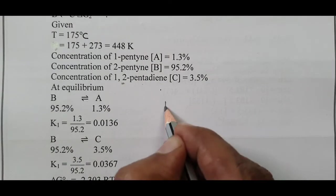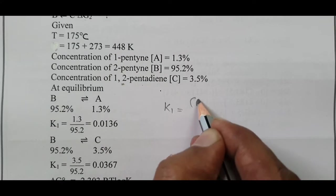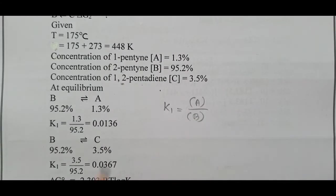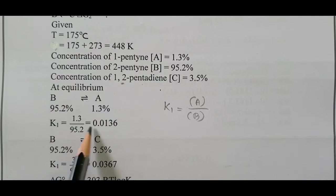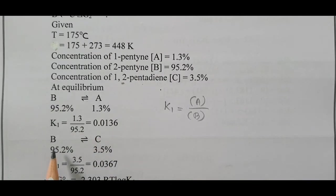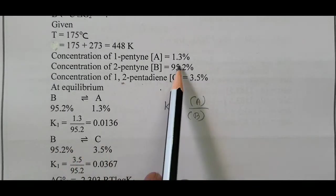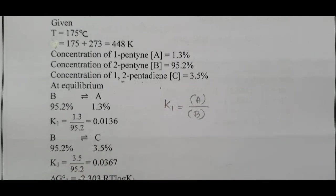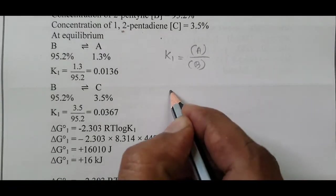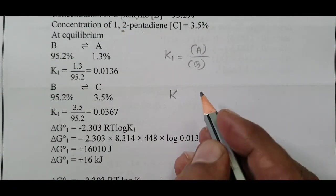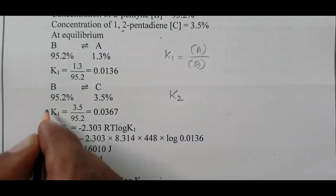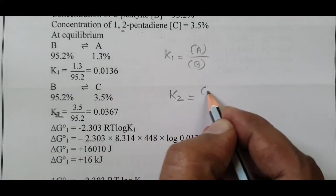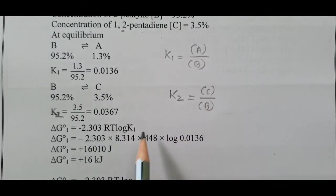At equilibrium, we need to calculate the equilibrium constant K₁. K₁ equals concentration of product divided by concentration of reactant. A percentage divided by B percentage equals 1.3 divided by 95.2 equals 0.0136. For the second equilibrium, K₂ equals concentration of C divided by concentration of B.